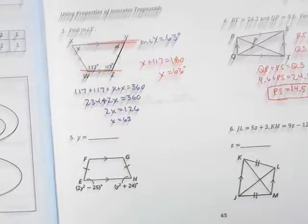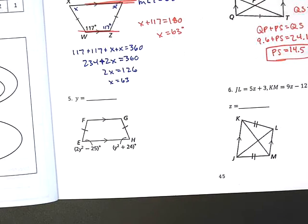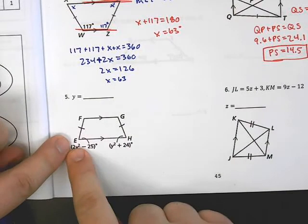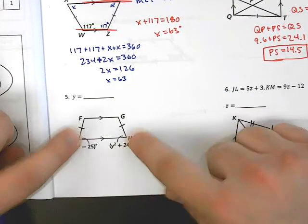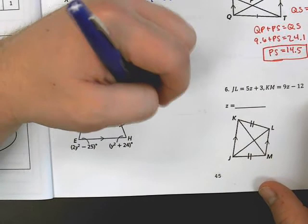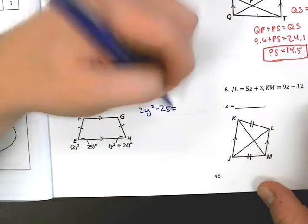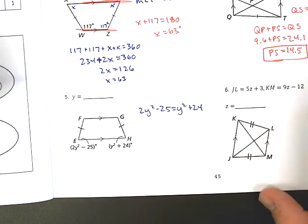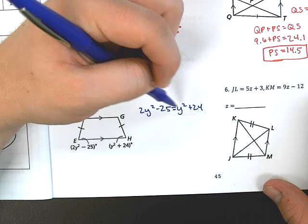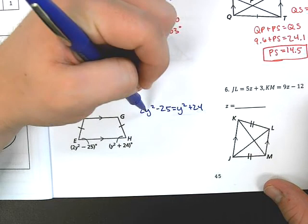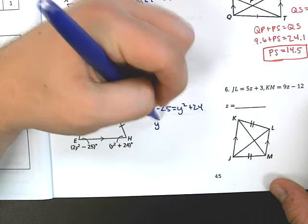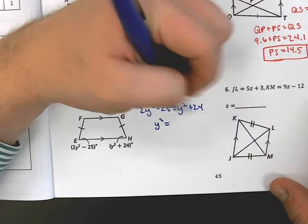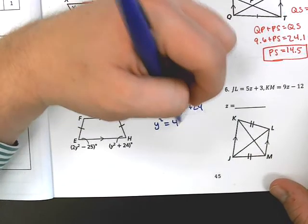Alright. Down at the bottom, very similar to problem 3 where we have angles, but this is even nicer, right? We already know that these are called base angles, because they're sharing the same base. So, I can just say 2Y squared minus 25 equals Y squared plus 24, and I can start to solve. Now, please don't freak out on this. You know what to do. I know I have to gather all the Y's, so I'm going to subtract Y squared. 2Y squared minus Y squared is just Y squared. And then I have to move my 25 to the other side, so 24 plus 25 is 49.